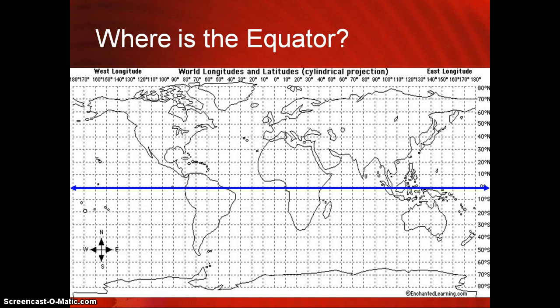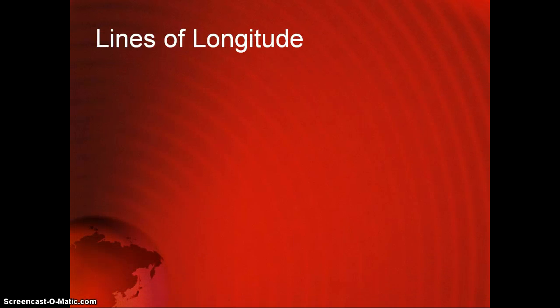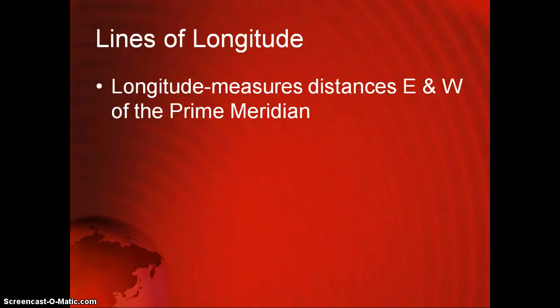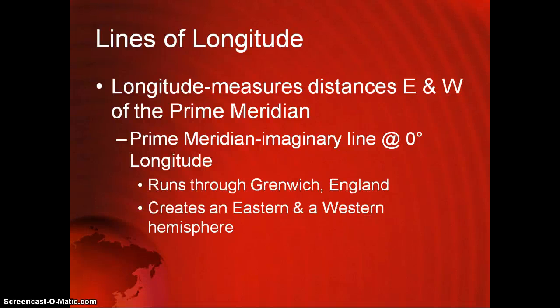If this is where you answered, it is correct. The equator creates a northern hemisphere and a southern hemisphere. Lines of longitude measure distances east and west of the prime meridian. The prime meridian is similar to the equator in that it is an imaginary line, this time at zero degrees longitude. This line runs through Greenwich, England and creates an eastern and western hemisphere.